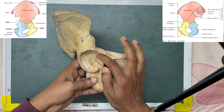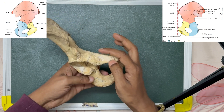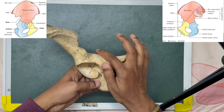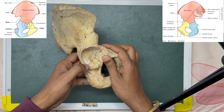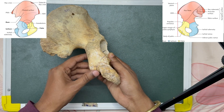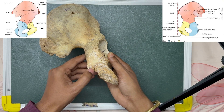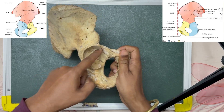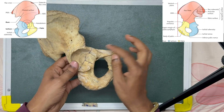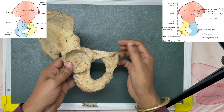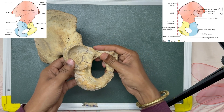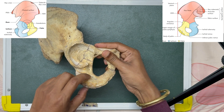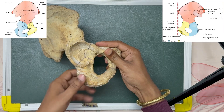The Y-shape consists of two limbs: the upper limb runs upwards towards the iliopubic eminence, and below, the line runs towards the lesser sciatic notch, dividing it into upper and lower parts. With this Y-shape bifurcation, the hip bone is divided into three parts: above is the ilium, anteromedially is the pubis, and posteroinferiorly is the ischium.